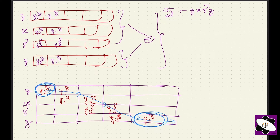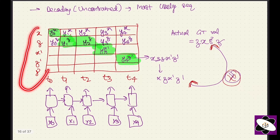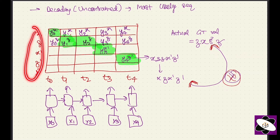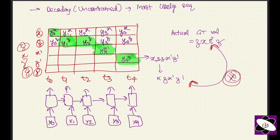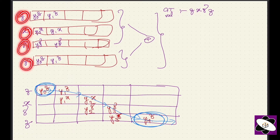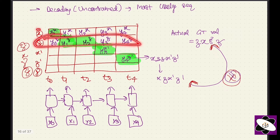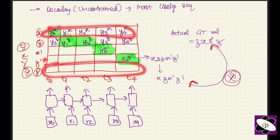The first step is alignment. Instead of taking all vocabulary terms, we only take the terms appearing in the ground truth target sequence. For example, if the GT contains z, x, gamma, and z again, we take just those rows — z, x, gamma, z — duplicating as needed.